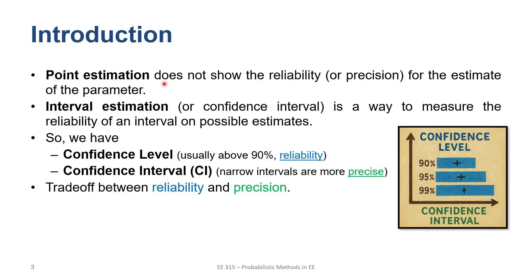Point estimation does not show the reliability or precision for the estimation of the parameter. If you want to estimate the mean, you get a certain number but you are not sure how close you are to the true mean. Interval estimation, or confidence interval, is a way to measure the reliability of an interval on possible estimates — for example, the average weight ranges from this to that with 90 percent confidence. The confidence level, usually above 90 percent, is sometimes referred to as reliability, while the confidence interval is referred to as precision.